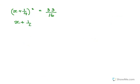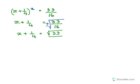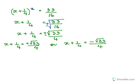We have (x + 1/4)² = 33/16. Taking the square root of both sides gives x + 1/4 = ±√33/4, since √16 = 4. There are two cases: x + 1/4 = +√33/4, or x + 1/4 = -√33/4.